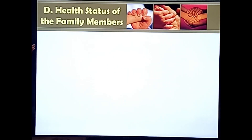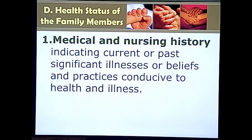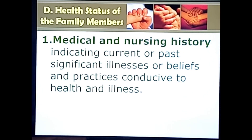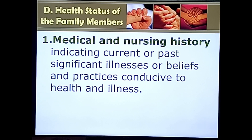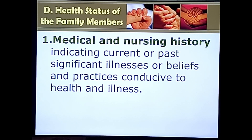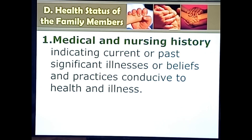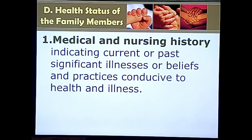The fourth category is Health Status of Each Family Member. Here, you write the medical and nursing history indicating significant illnesses with age, practices, and conditions for health and illness. This gives an idea of whether the family has any health deficit. You describe whether members are currently sick or have previous diagnoses. You also note whether diseases are diagnosed or undiagnosed, and any family history — for example, if parents have cancer or diabetes.